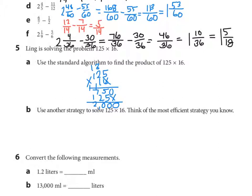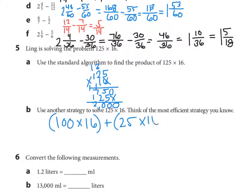Part B says use another strategy to solve — think of the most efficient strategy. Using partial products: 100 times 16 plus 25 times 16. One hundred times 16 is 1,600, and 25 times 16 is 400. Sixteen hundred plus 400 equals 2,000.